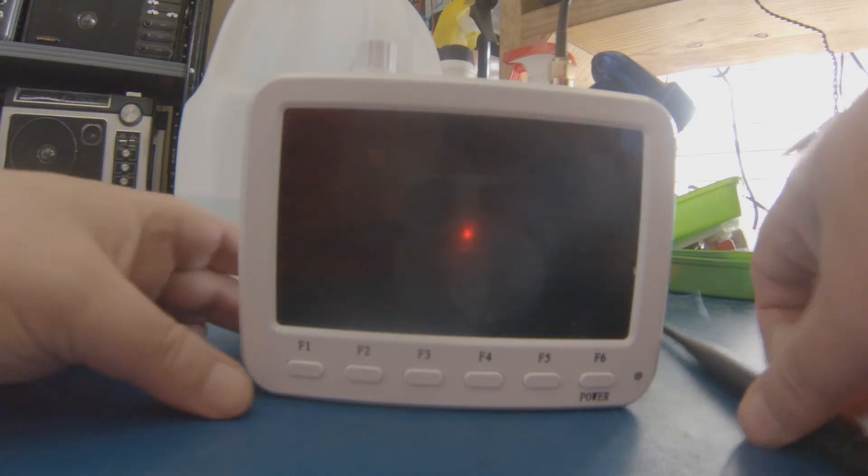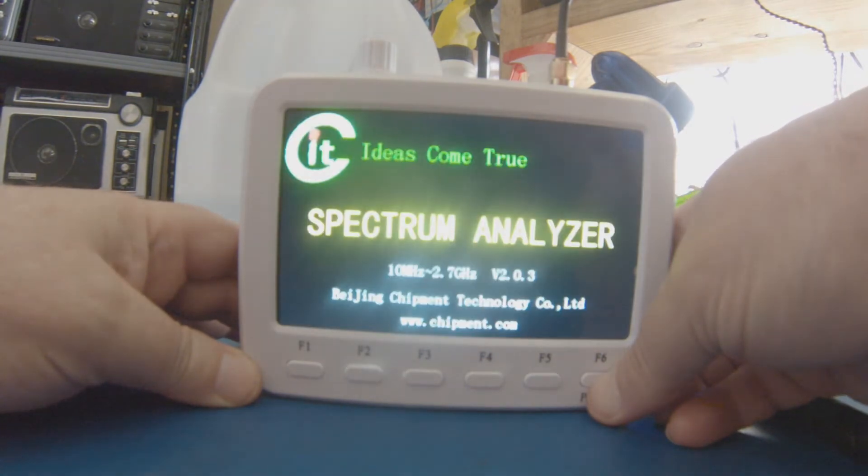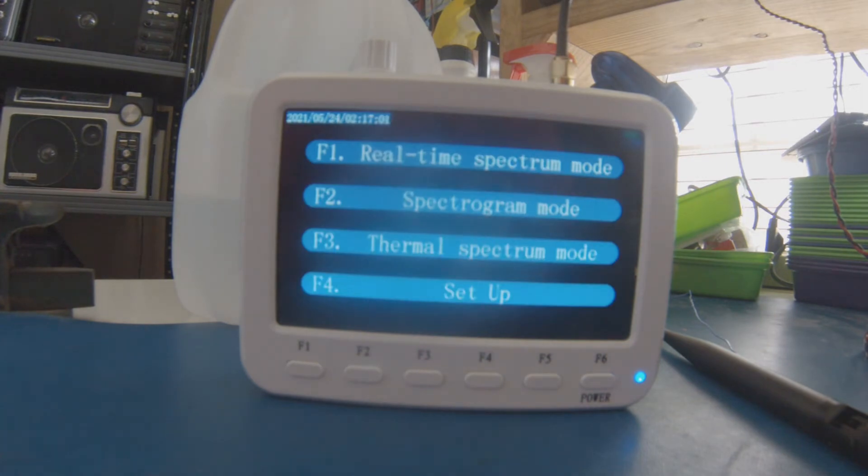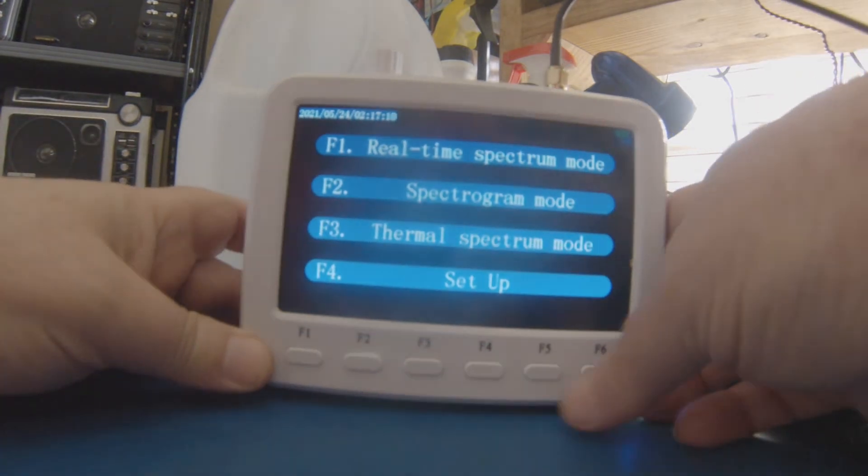To turn it on, you activate the right-hand soft key which is also labeled power, and there you have the frequency range. It comes up with a menu: real-time spectrum analyzer, spectrogram, thermal spectrum, setup. We'll look at the setup first.